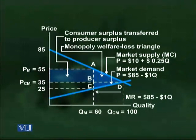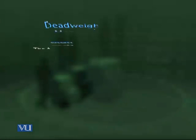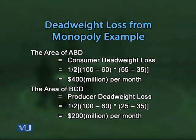Looking at the diagram, the dark shaded area indicates the dead weight loss and the light shaded area shows the consumer surplus transferred to producer surplus. The dead weight loss to consumers is shown by triangle ABT. The area of this triangle is 1/2 × base × height = 1/2 × (100 − 60) × (55 − 35) = 1/2 × 40 × 20 = $400 million per month.